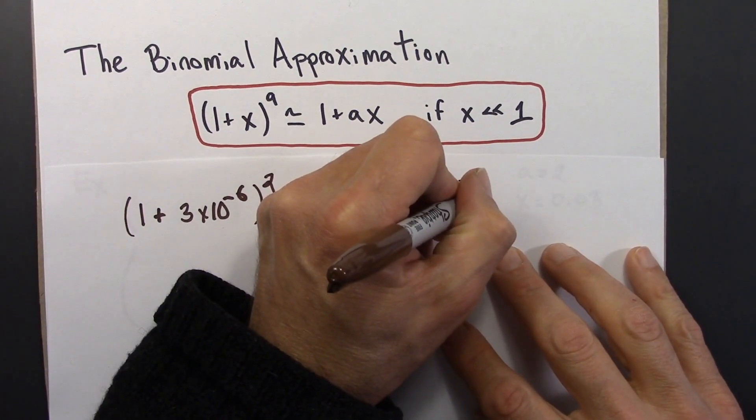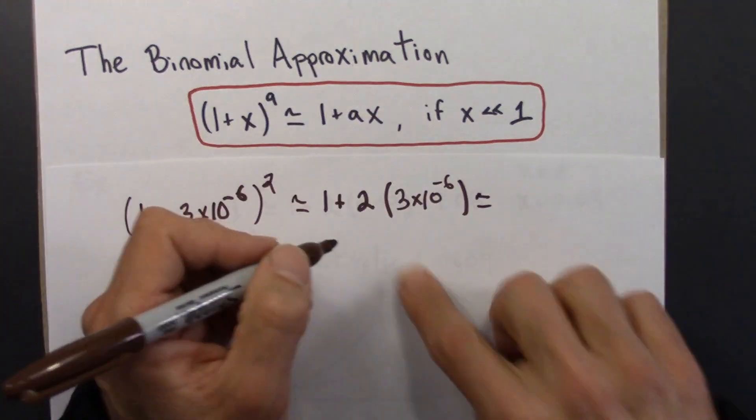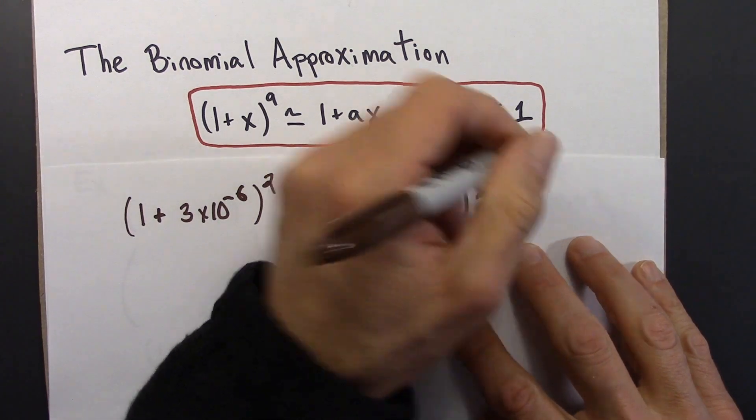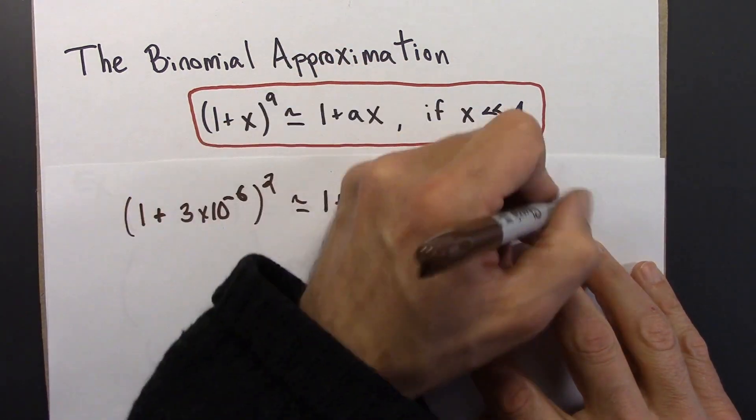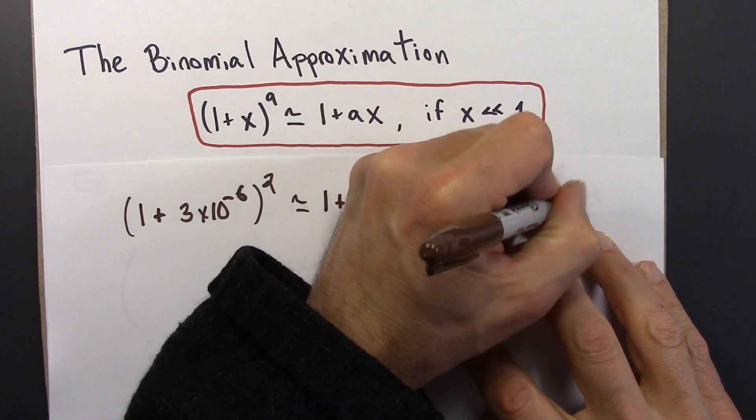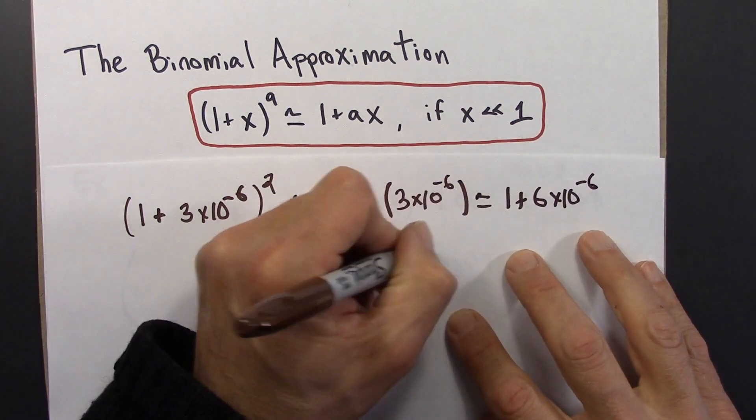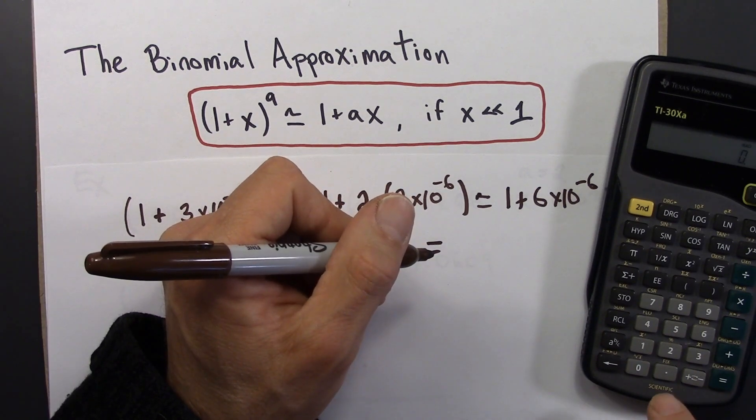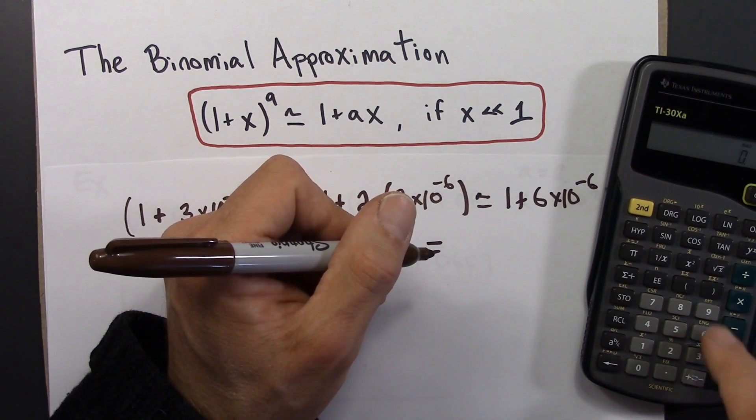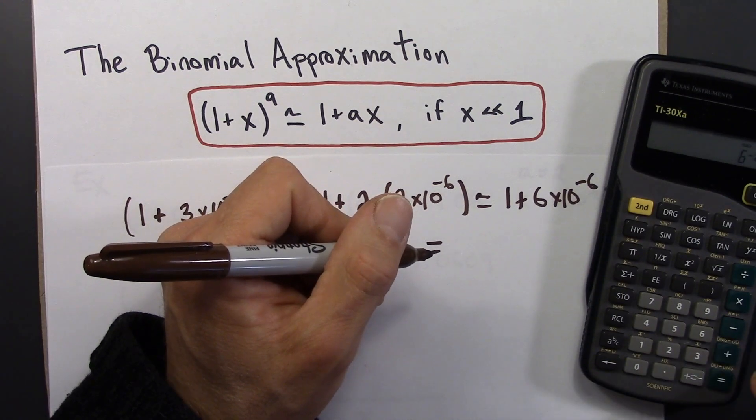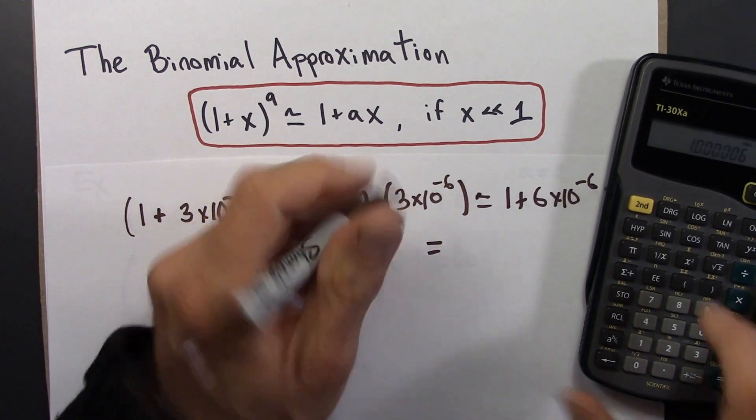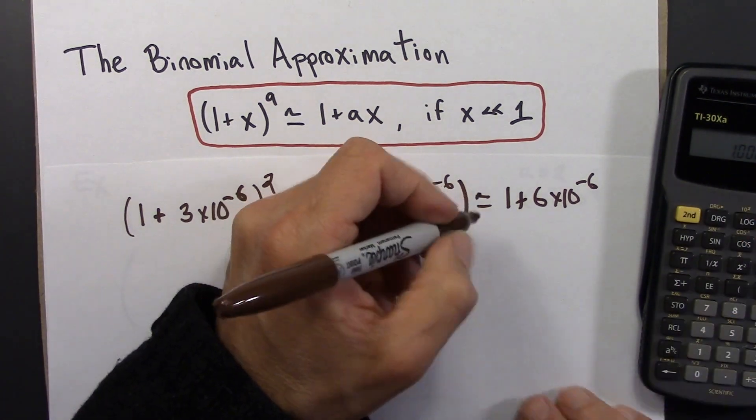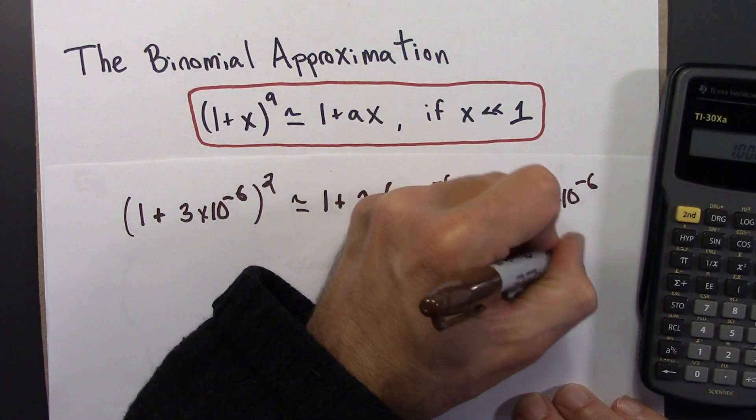So that's going to be, let's see, so this is going to be 6, 2 times 3 is 6. So it's going to be 1 + 6×10⁻⁶. And that is, I'm going to do it on a calculator so I don't miscount zeros. 6e⁻⁶ plus 1 equals 1.000000006. Okay, so that's using the binomial approximation.